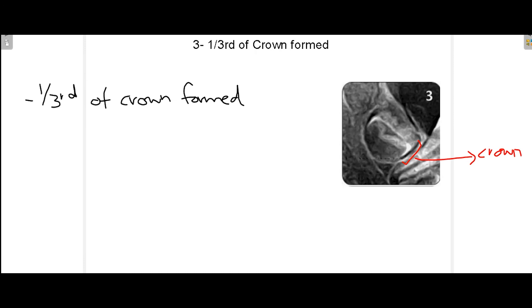At stage 3, if you look at this radiograph, you can see that approximately one third of the crown has now completed its formation. So stage 3 marks the point where one third of the crown is now formed.